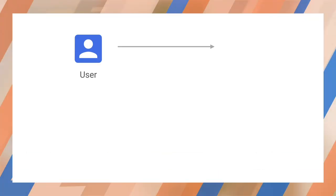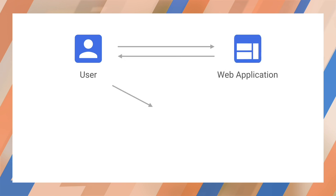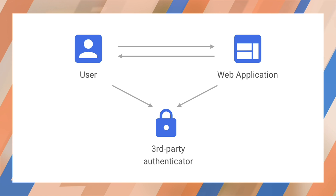First, your user asks to sign in to your application using a third party. Your app pops up or redirects to the third party's login page. At the same time, your app identifies itself to the third party service. This is important — there needs to be a trust relationship between the third party and your app, just as there is between the user and the third party. That chain of trust protects you, the third party, and the user.